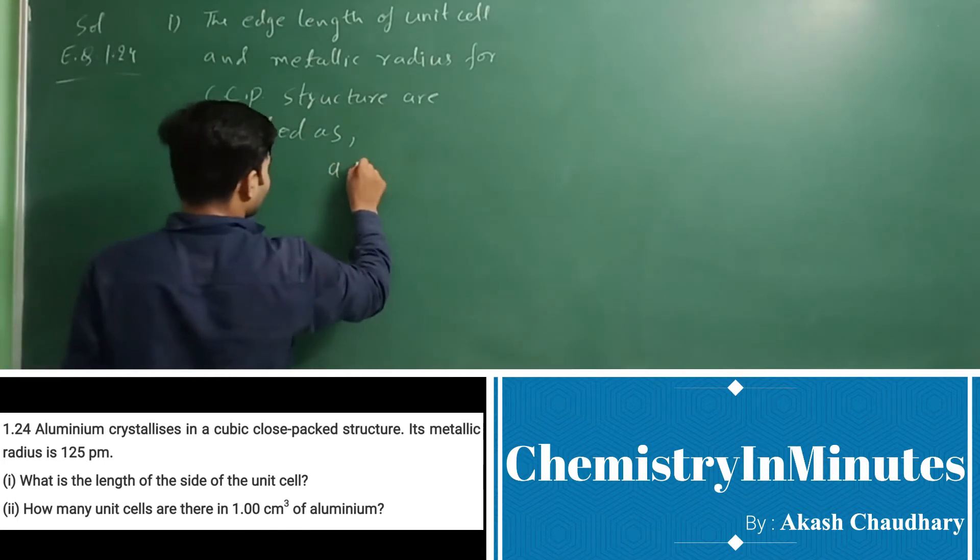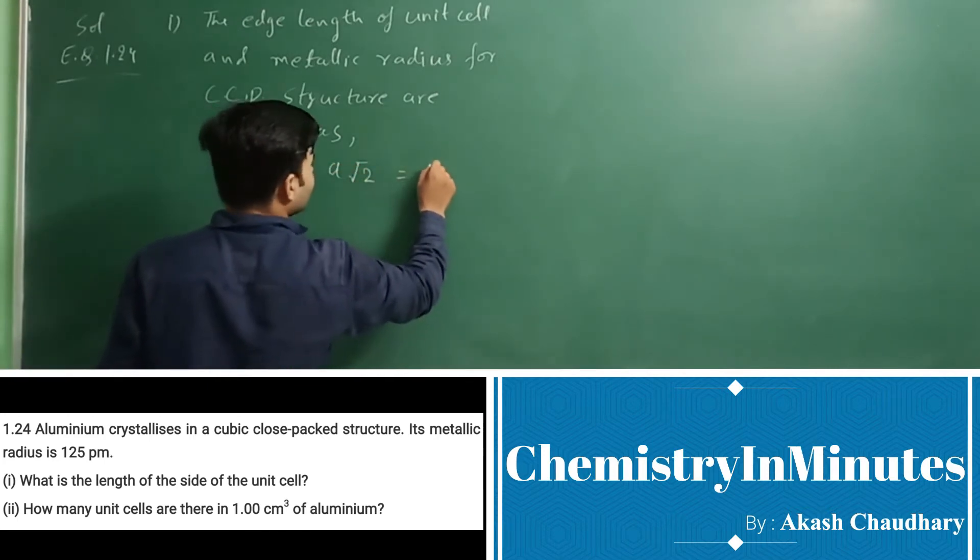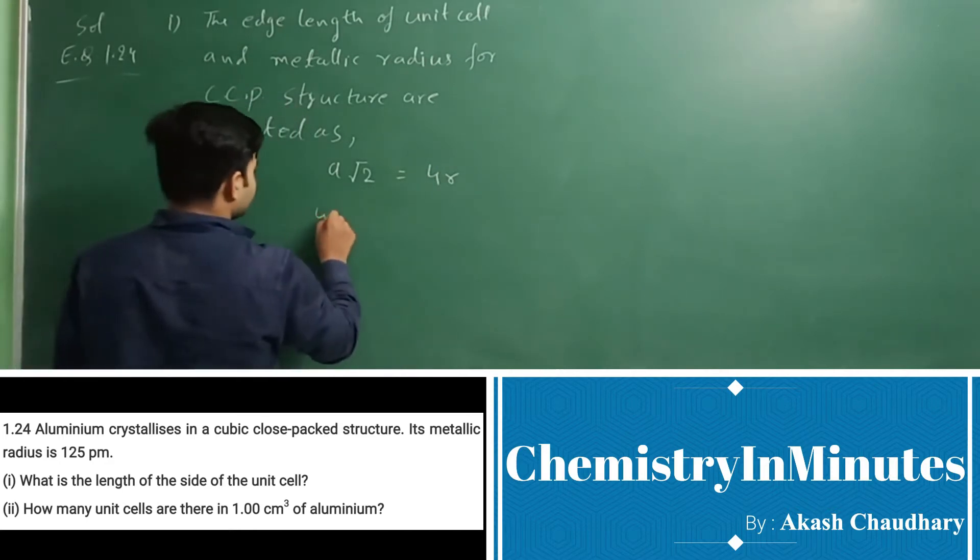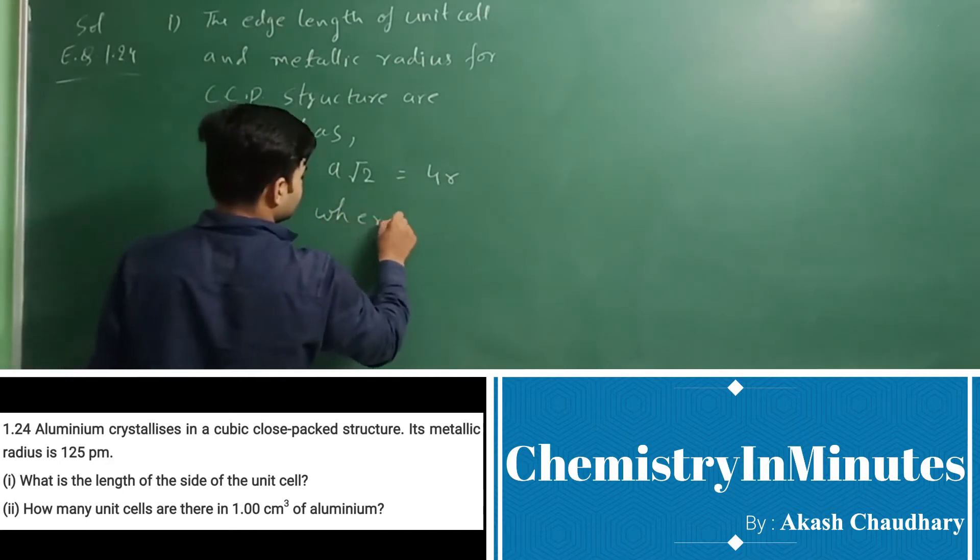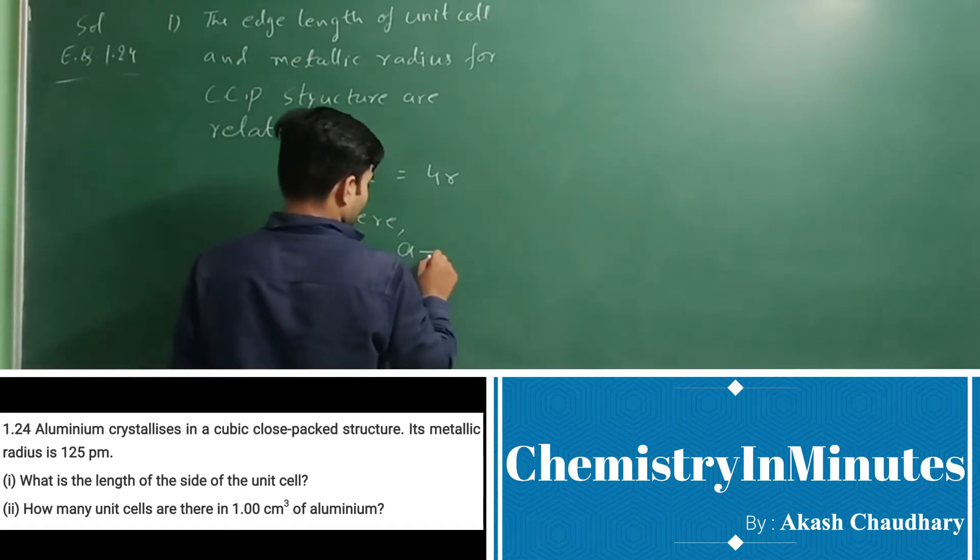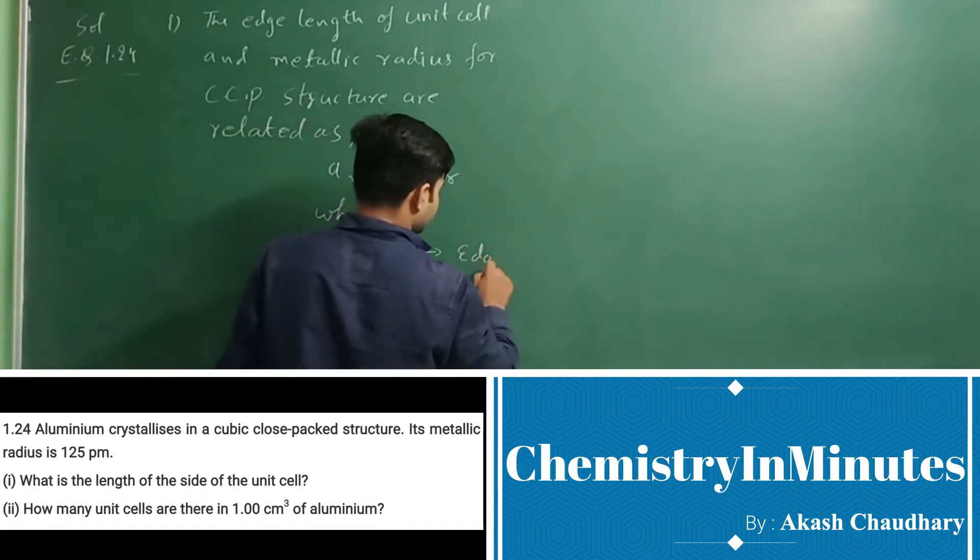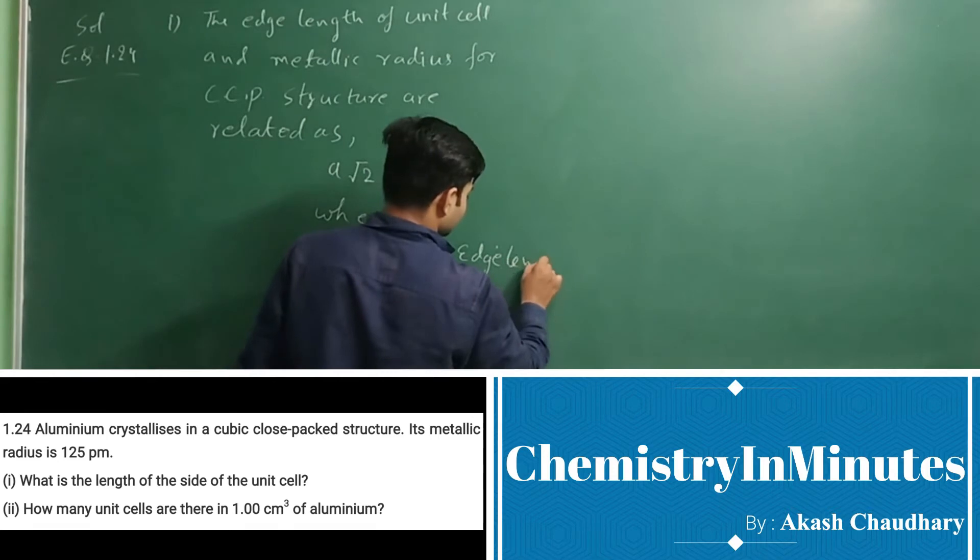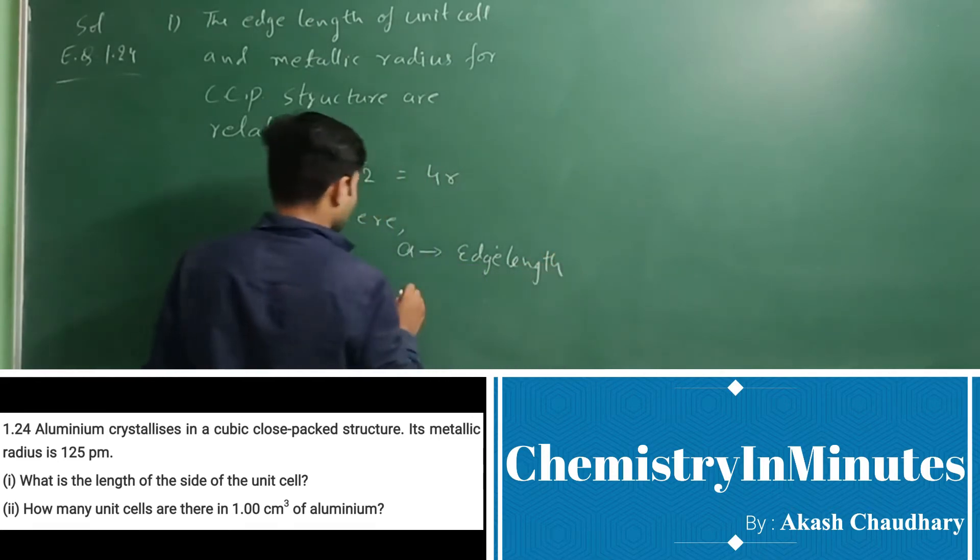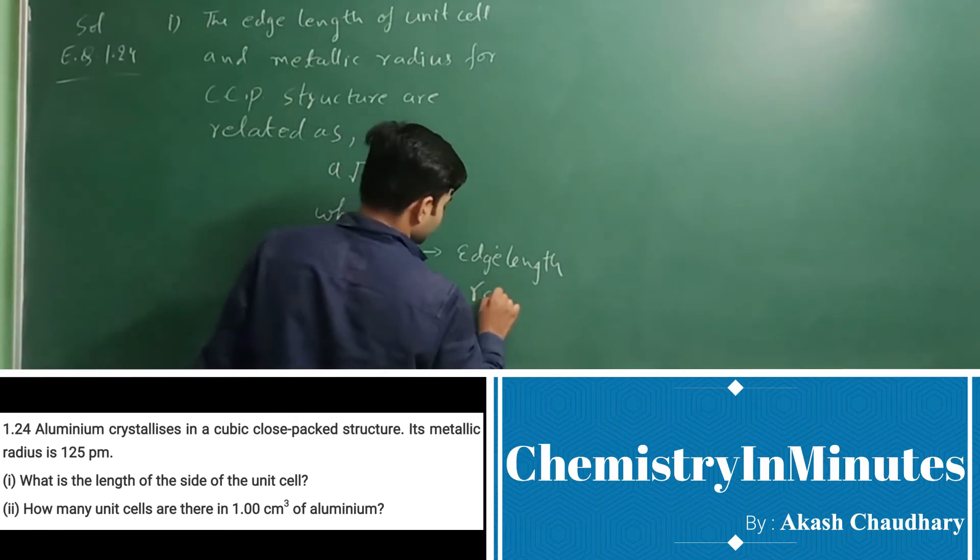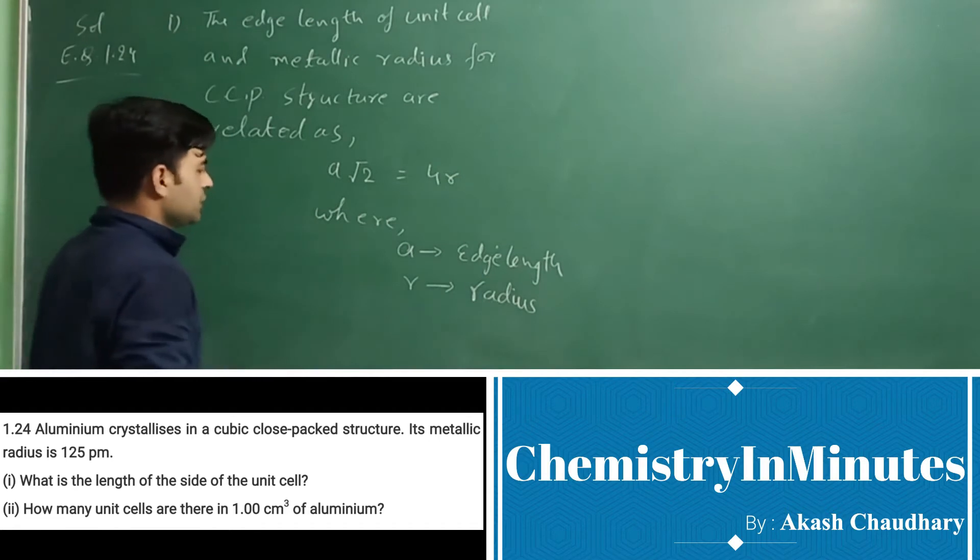a√2 = 4R, where a is edge length and R is radius.